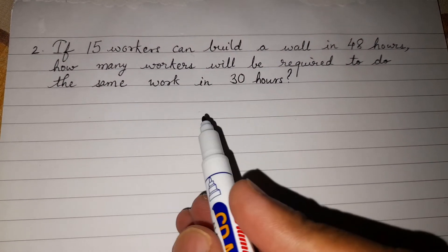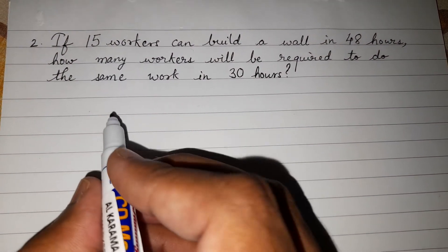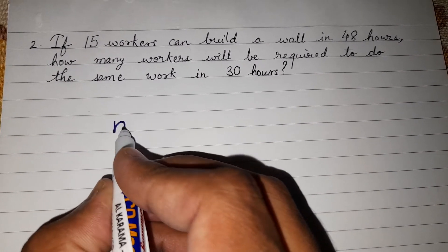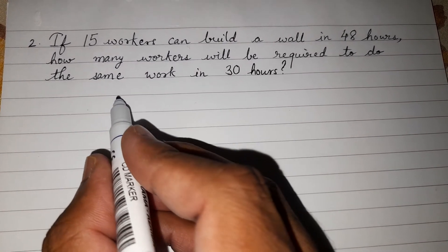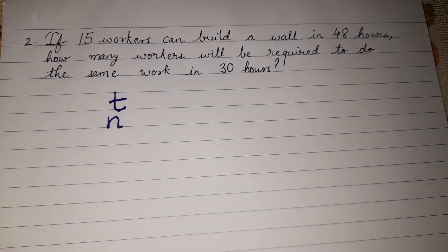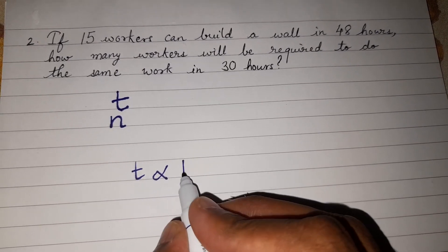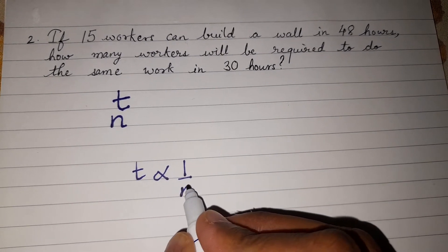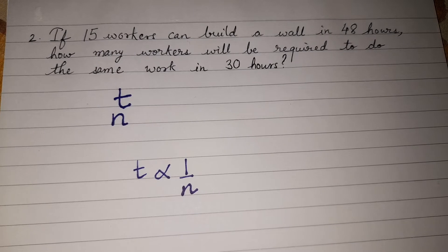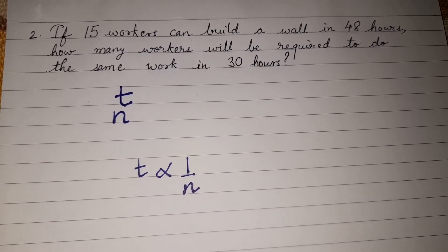We have identified that this is inverse variation. We will take the number of workers as n and the time taken as t. Since this is inverse variation, t varies inversely with n — if the number of workers increases, the time taken for building the wall will decrease. Therefore this is inverse variation or inverse proportion.